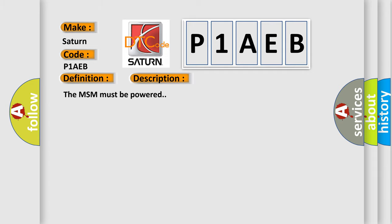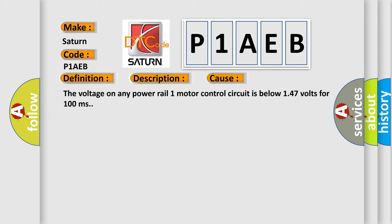The MSM must be powered. This diagnostic error occurs most often in these cases: The voltage on any power rail one motor control circuit is below 1.47 volts for 100 milliseconds.